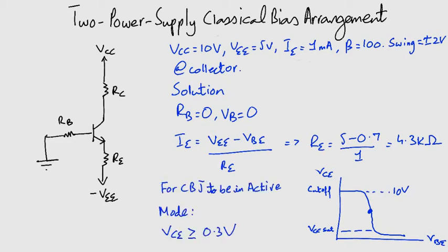Remember that for CBJ, that is the common base junction, to be in active mode, VCE should be greater than or equal to 0.3 volts. The lowest of this limit is slightly above VCE sat which is usually 0.2 volts. So our point is marked by X on this diagram, slightly above VCE sat and having a value of 0.3 volts. This is the point of edge of saturation.